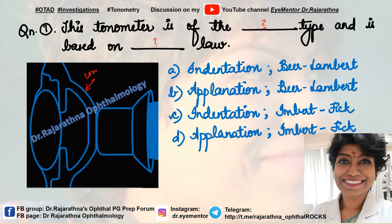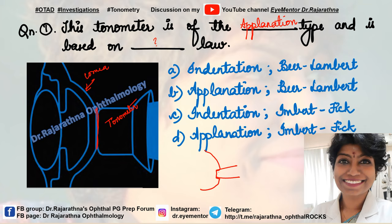You can see the cornea here and the tip of the tonometer touching the cornea, and what it is doing on the cornea is just flattening the corneal surface. So it is definitely applanation type, because we have two types: applanation and indentation. If it were indentation, it would have indented the corneal surface.